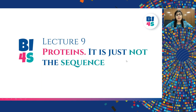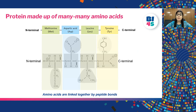We already know that the sequence of a protein is made up of many many amino acids. They are basically chains of amino acids with an N terminal and a C terminal end. These amino acids are linked together by bonds known as peptide bonds, and therefore the chain is also known as a polypeptide chain.